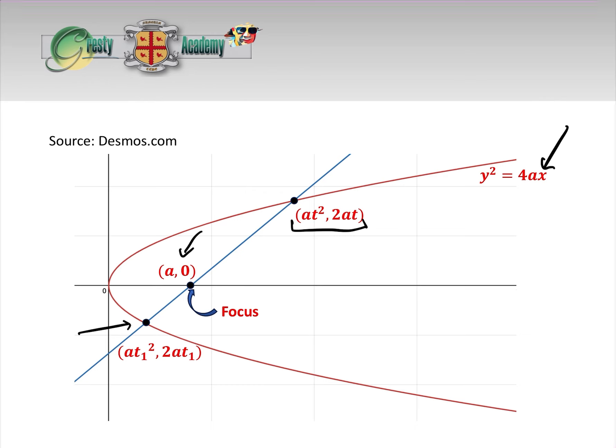Here is the focus. The general point of the focus is a,0. And this point down here, we're just going to use a different t, at1 squared, 2at1.